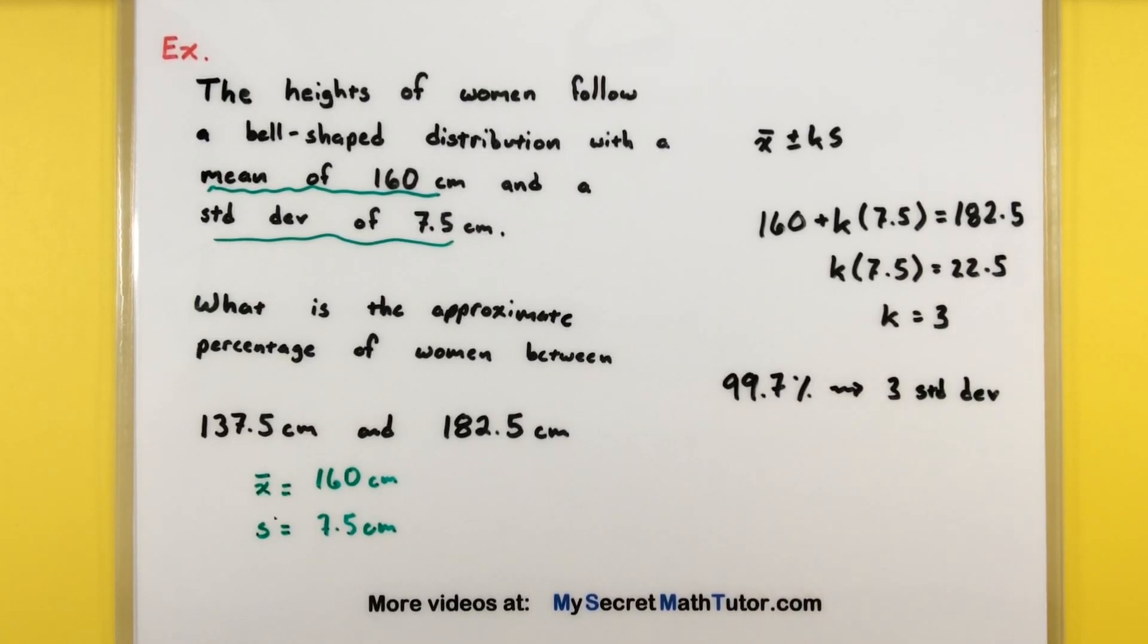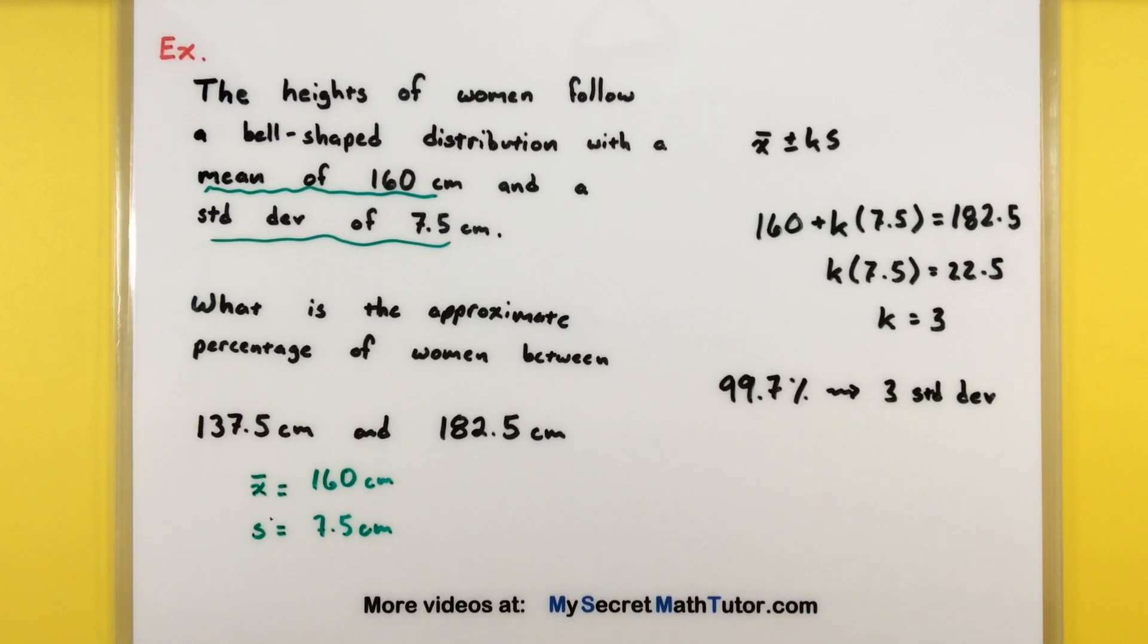What was the approximate percentage of women between these two values? Well, according to the empirical rule, it's 99.7%. And again, that might not be exact, but it is a really good approximation.